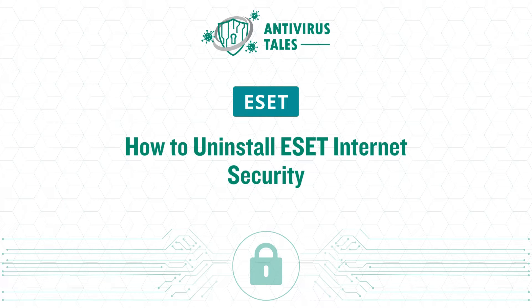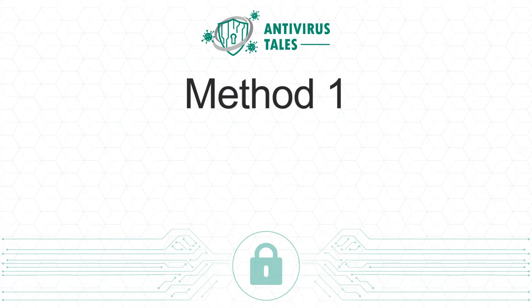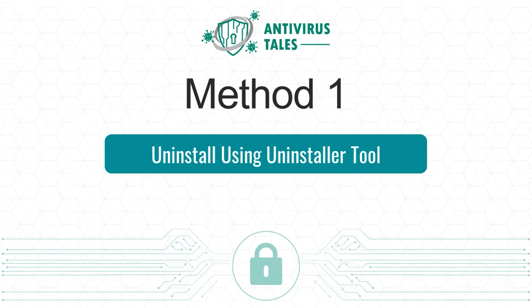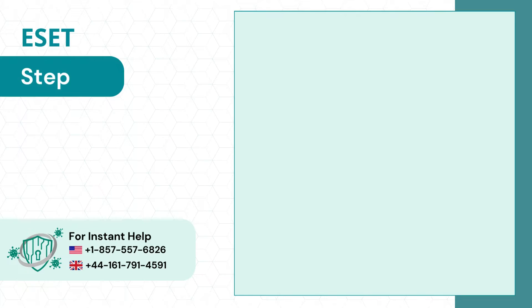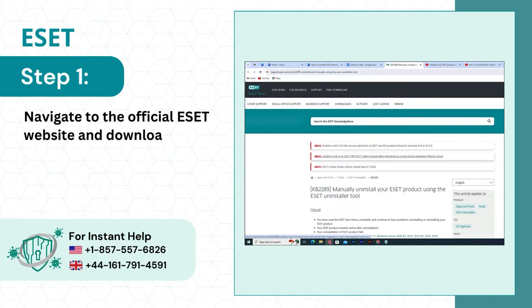How to Uninstall ESET Internet Security: 2 Quick Solution Methods. Method 1: Uninstall using the Uninstaller Tool. Step 1: Navigate to the official ESET website and download the ESET Uninstaller.